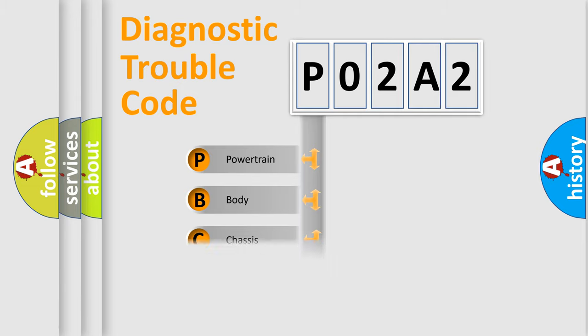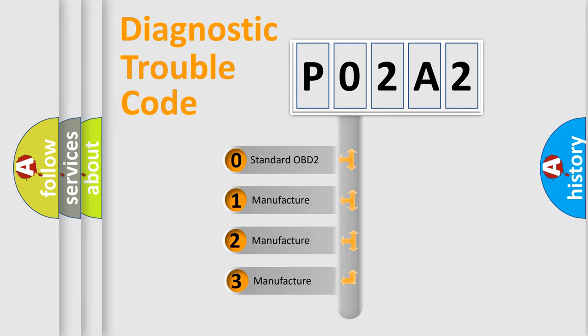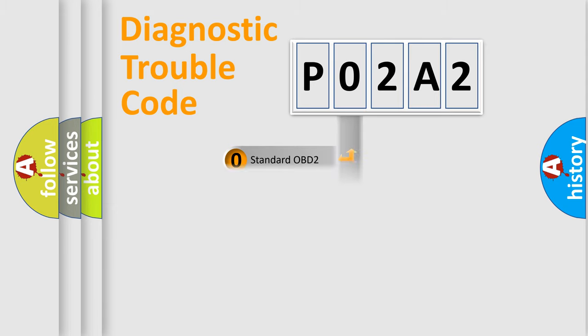Powertrain, Body, Chassis, and Network. This distribution is defined in the first character code. If the second character is expressed as zero, it is a standardized error. In the case of numbers 1, 2, or 3, it is a manufacturer-specific expression of the car-specific error.